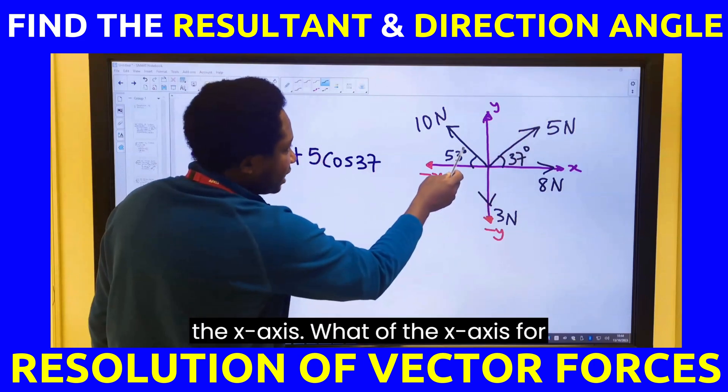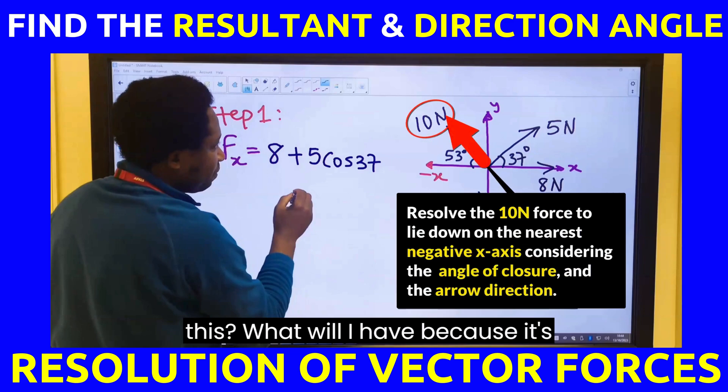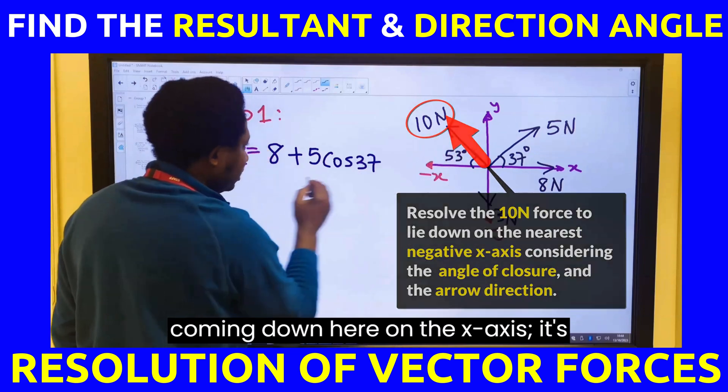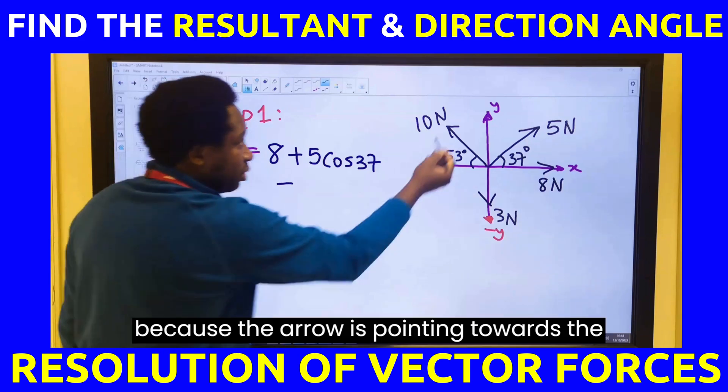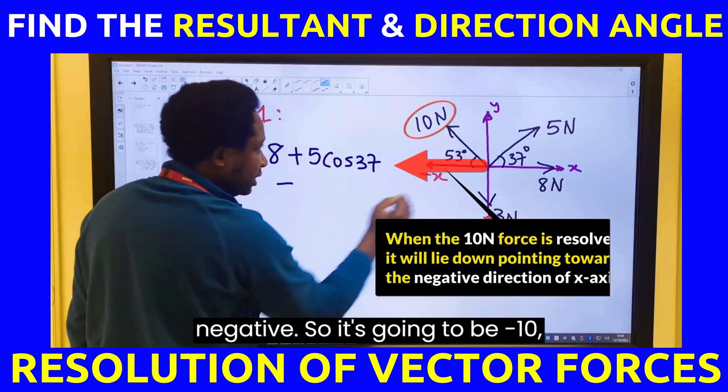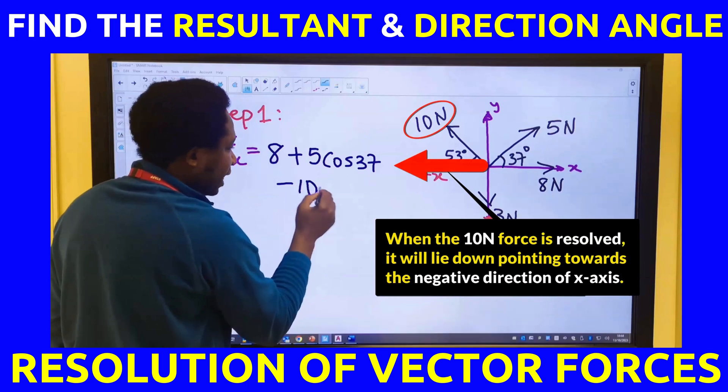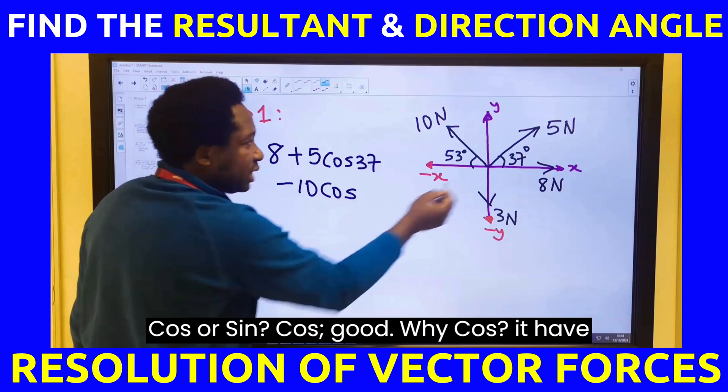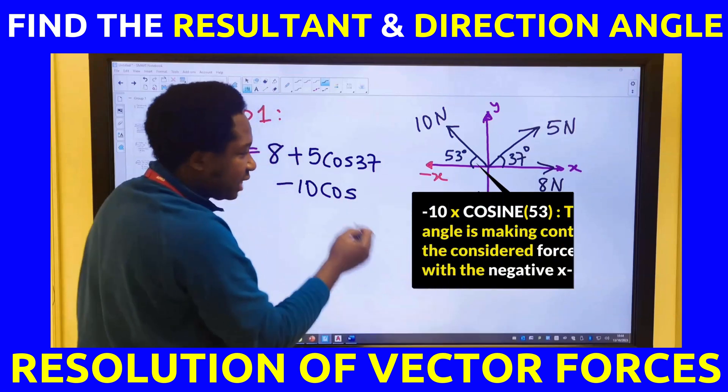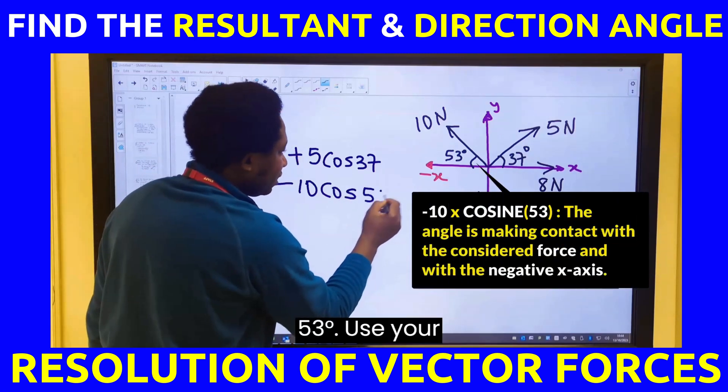What of the x-axis for this? What will I have? Because it's coming down here on the x-axis, it's going to be minus. Why minus? Because the arrow is pointing towards the negative. So, it's going to be minus 10 cos 53 degrees. Why cos? It has contact with the x-axis.